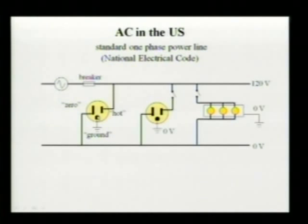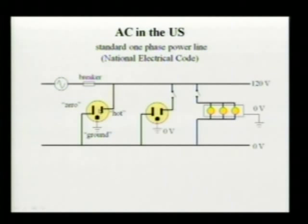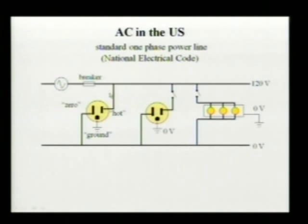The ground contact is connected to all frames of electrical appliances — it's not connected to the device that runs. For example, the door of a dishwasher is connected to this ground contact, while the other two contacts are connected to the heater and the motor in the dishwasher. The reason is that if the hot wire gets loose and touches the door, the current will flow through the door to the local ground and will burn the breaker.